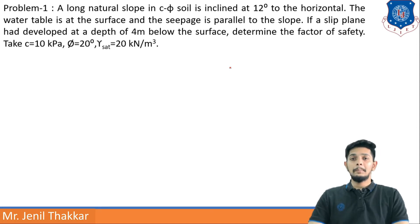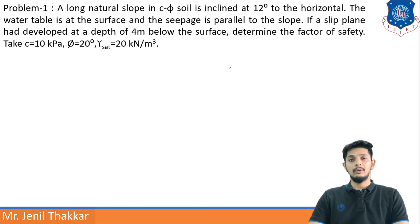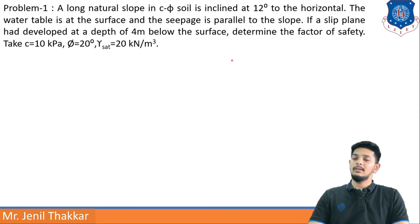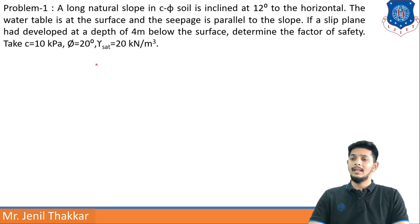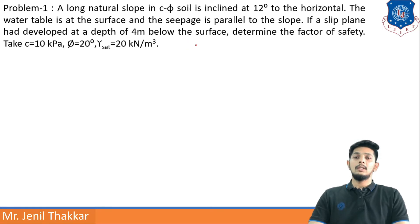In the previous video we discussed the case of c-φ soil with seepage parallel to the slope surface and the relevant formulas. A slip plane has developed at a depth of 4 meters. We need to determine the factor of safety. Given data: c = 10 kPa, φ = 20 degrees, and γ_saturated = 20 kN/m³.